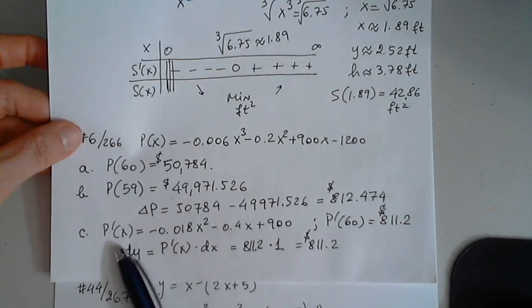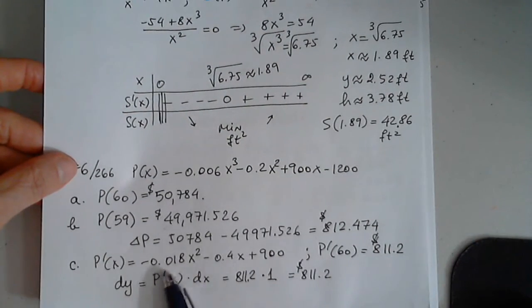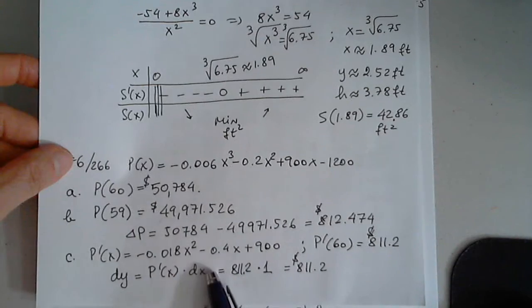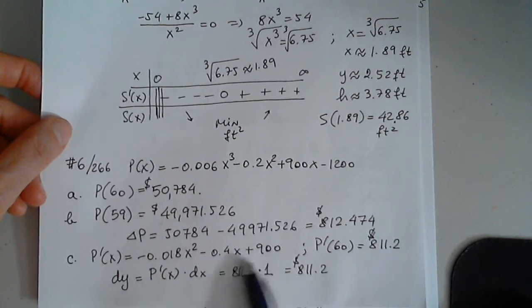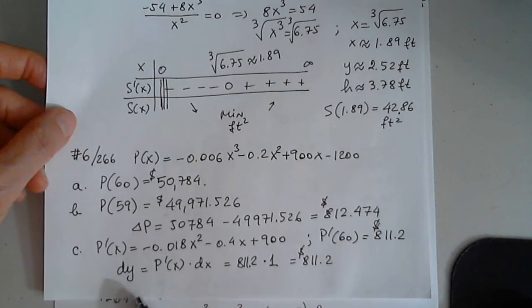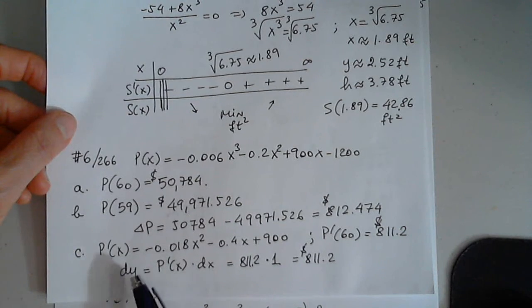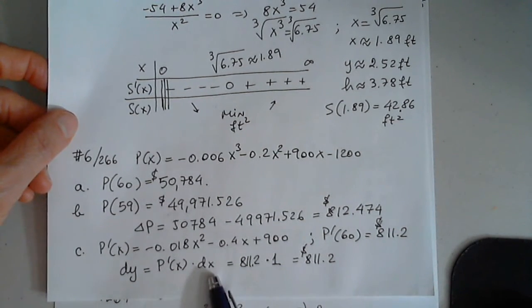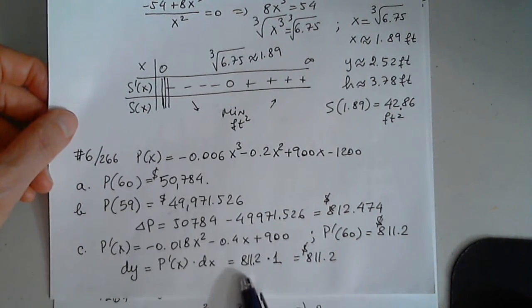Now we were asked to find a marginal profit, which is the derivative of the profit. Bring down 3. Bring down 2 plus 900. We were asked to find the marginal profit when 60 units are produced. We just plugged it in. And this is basically the differential of the function. dy equals p prime times dx. dx in this case is the difference between 59 and 60, which is just 1.